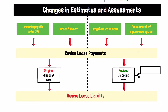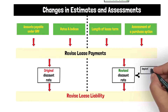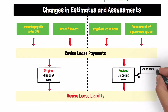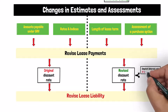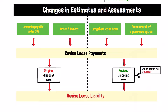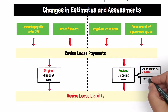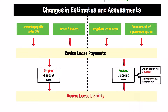The lessee shall determine the revised discount rate on the date of reassessment as the interest rate implicit in the lease for the remaining lease term, if that rate can be readily determined, or the lessee's incremental borrowing rate on the date of reassessment, if the interest rate implicit in the lease cannot be readily determined.